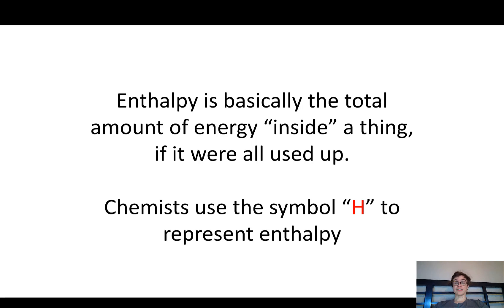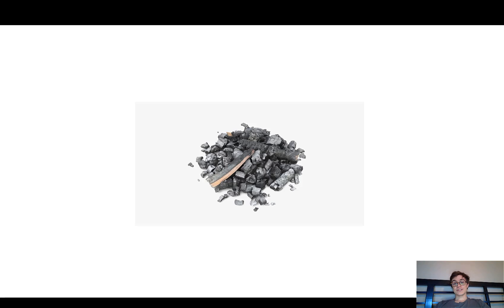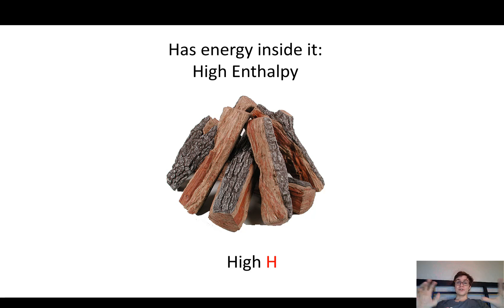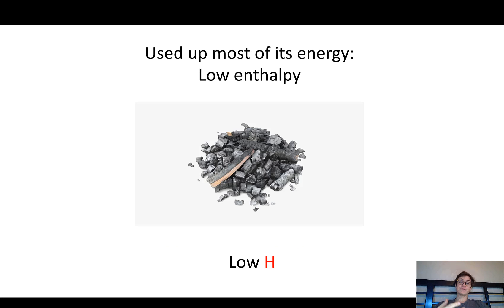Enthalpy is basically the total amount of energy inside something if it was all used up. Chemists use the symbol H to represent enthalpy. For example, if you have some logs and set them on fire and they turn into ashes — the logs at the beginning have a high enthalpy, a high H, meaning they have a lot of energy stored in the chemicals. But when it burns, that energy is going down; the logs are losing energy and releasing it as heat. At the end, you have ashes with low enthalpy, which is why you can't set ashes on fire and get more fire — they've used up all the energy.